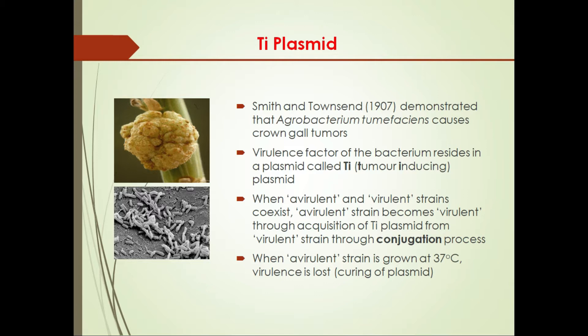When avirulent and virulent strains exist together, the avirulent strain becomes virulent through acquisition of the Ti plasmid from the virulent strain through conjugation. We have already studied the conjugation process, and this Ti plasmid is a conjugative plasmid — it promotes conjugation, similar to the F plasmid, which is also a conjugative plasmid.